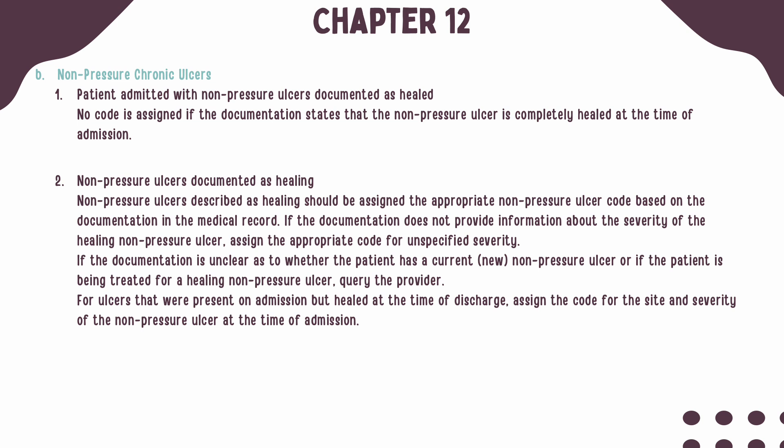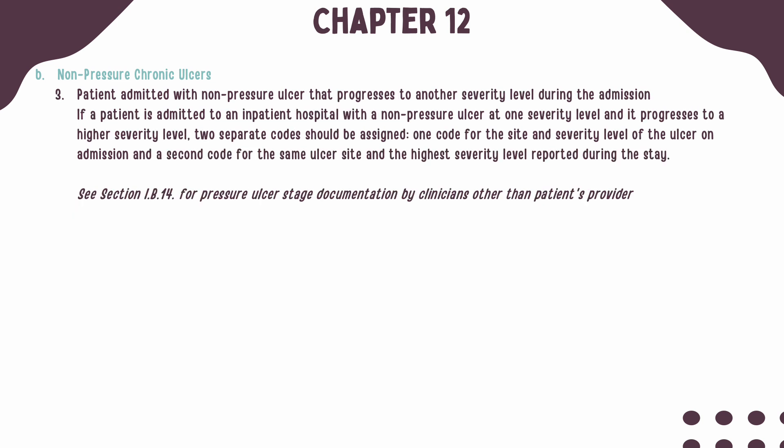For non-pressure ulcers present on admission and documented as healed at the time of discharge, assign the code for the site and stage of the non-pressure ulcer at the time of admission. If a patient is admitted to an inpatient hospital with a non-pressure ulcer at one stage and it progresses or evolves to a higher severity, two separate codes should be assigned — first for the site and severity at admission, and second for the same ulcer site and the highest severity level reported during the stay.